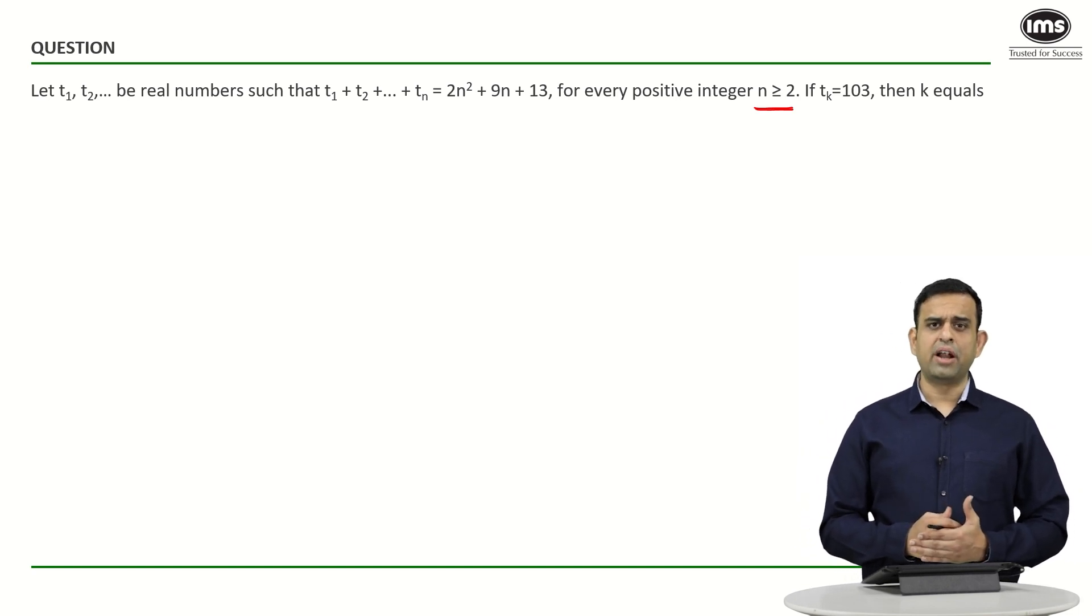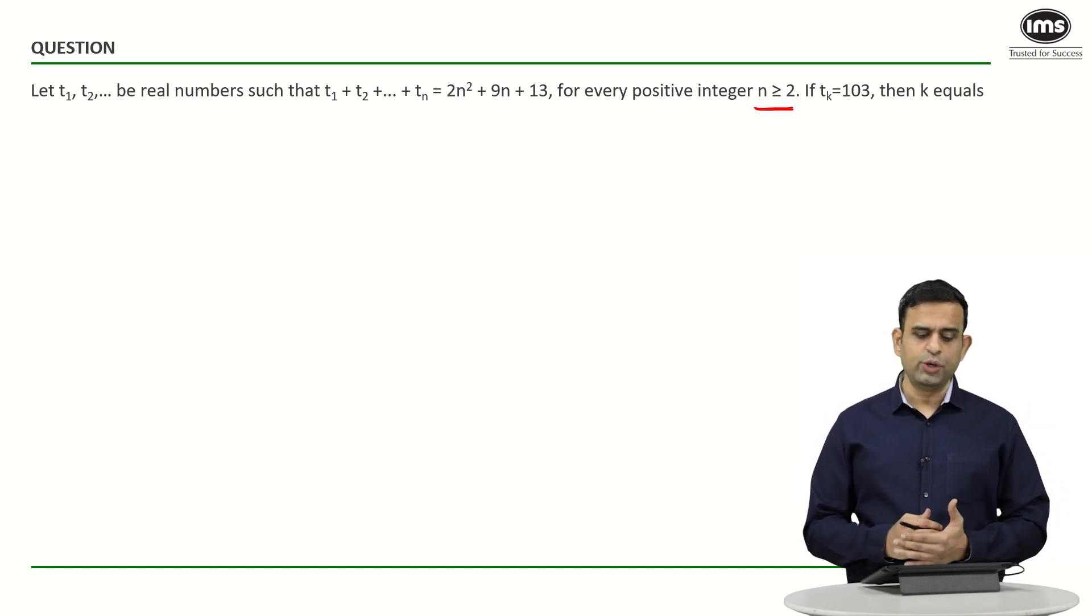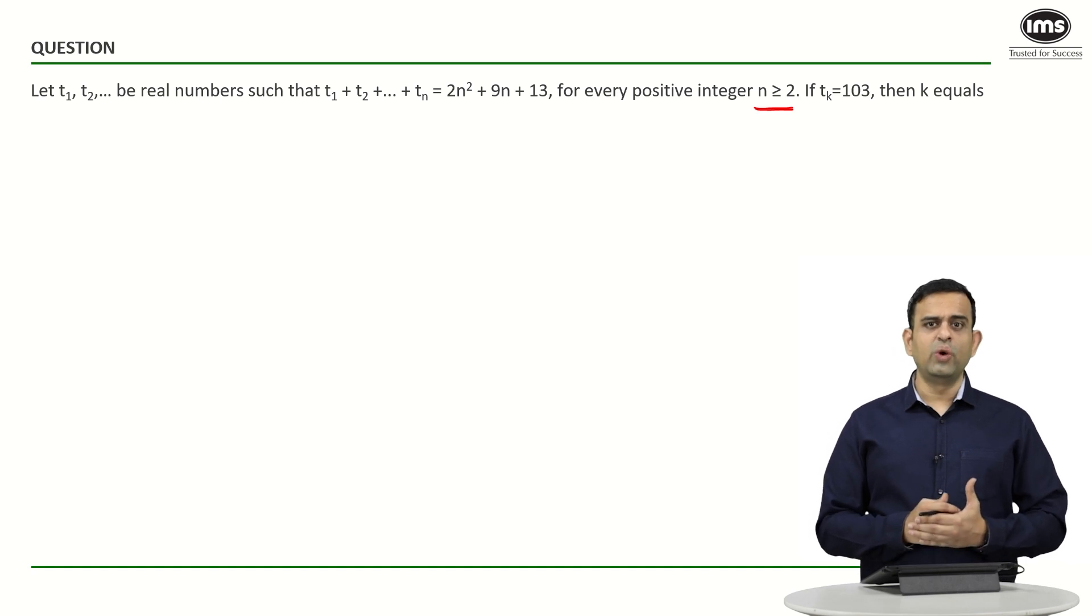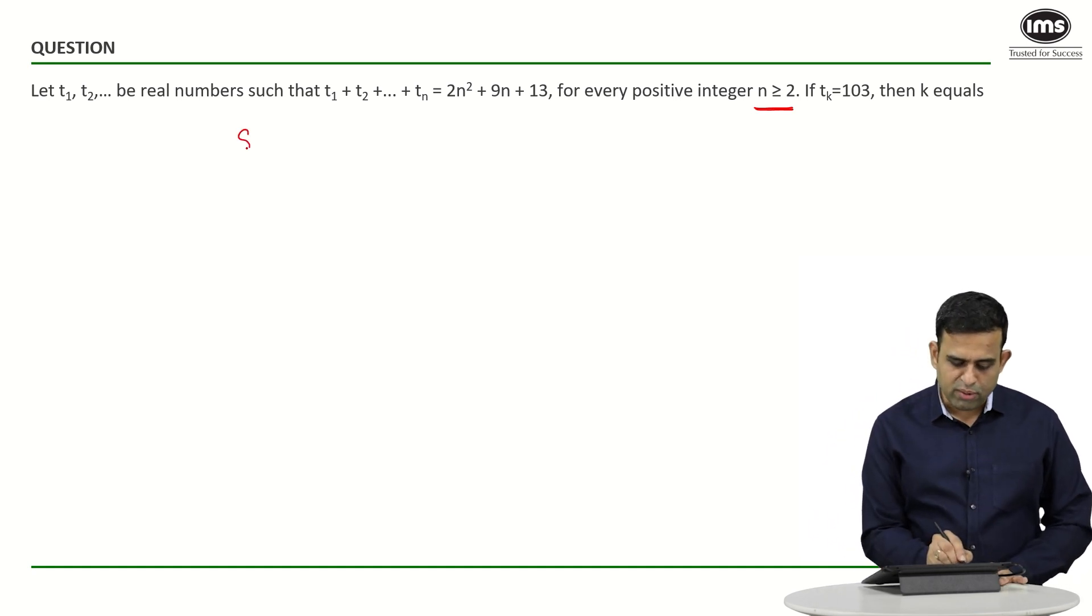Now what we can understand is if I look at t₁ + t₂ up to tₙ, it's nothing but equal to Sₙ. So sum of the n terms, which is t₁ + t₂ up to tₙ, which is given to us as 2n² + 9n + 13.